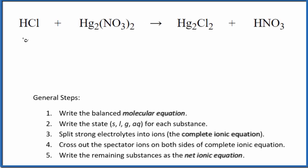Let's balance the net ionic equation for HCl plus Hg₂(NO₃)₂. This is hydrochloric acid. This is mercury one nitrate.